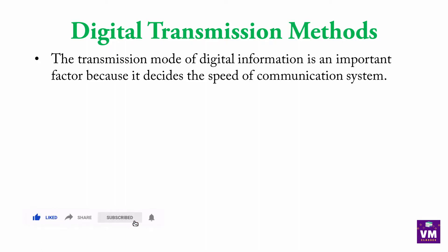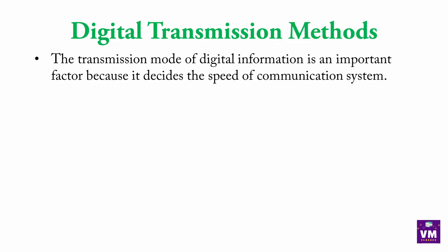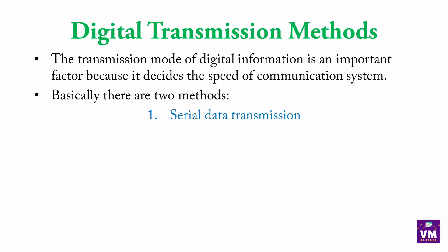The transmission mode of digital information is an important factor because it decides the speed of the communication system. तो जब हम digital communication कर रहे हैं तो उसकी जो speed है, वो कितना fast transmission हो रहा है उस पे depend करता है। Basically there are two methods: Serial Data Transmission and Parallel Data Transmission.